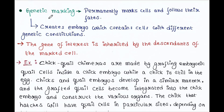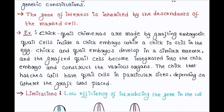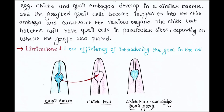The next process is genetic marking. This process permanently marks cells and follows their effects. It creates embryos which contain cells with different genetic constitutions, and the gene of interest is inherited by the descendants of the marked cell. For example, chick-quail chimeras are made by grafting embryonic quail cells inside a chick embryo while the chick is still in the egg. Chick and quail embryos develop in a similar manner, and the grafted quail cells become integrated into the chick embryo and construct various organs. The chick that hatches will have quail cells in particular sites depending on where the graft was placed.